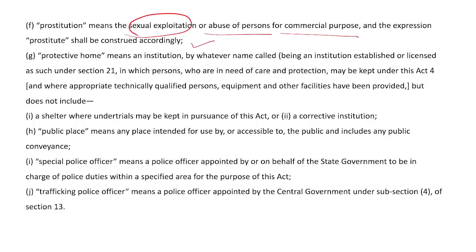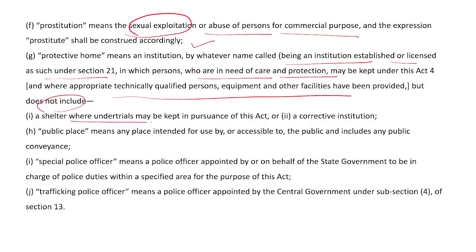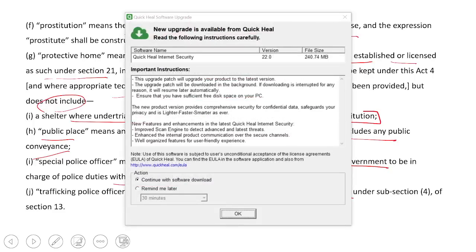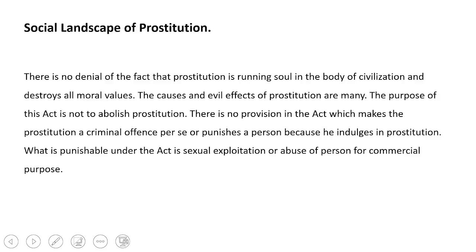'Protective home' means an institute or establishment licensed under Section 21 where a person's care is provided and they get protection and other facilities under the Act, but does not include a shelter where under-trials may be kept or a corrective institution. 'Public place' means any place intended for use by or accessible to the public and includes any public conveyance. 'Special police officer' means a police officer appointed by or on behalf of the state government in charge of police duties within a specified area. 'Trafficking police officer' means a police officer appointed by the central government under Section 13(4).